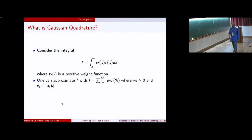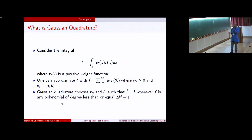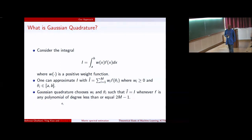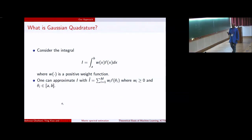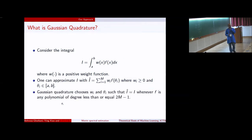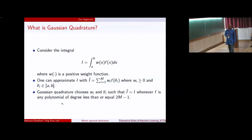If you have an integral that looks like this, where w is a positive weight function, then we can approximate the integral with a summation. So the summation is done at some specific points, wi and theta i, and these values theta i are between a and b. And the interesting thing about the Gaussian quadrature method is that as long as your function f is a polynomial of degree less than or equal to 2m minus 1, you just need to choose m weights wi, theta i, and compute the integral exactly.